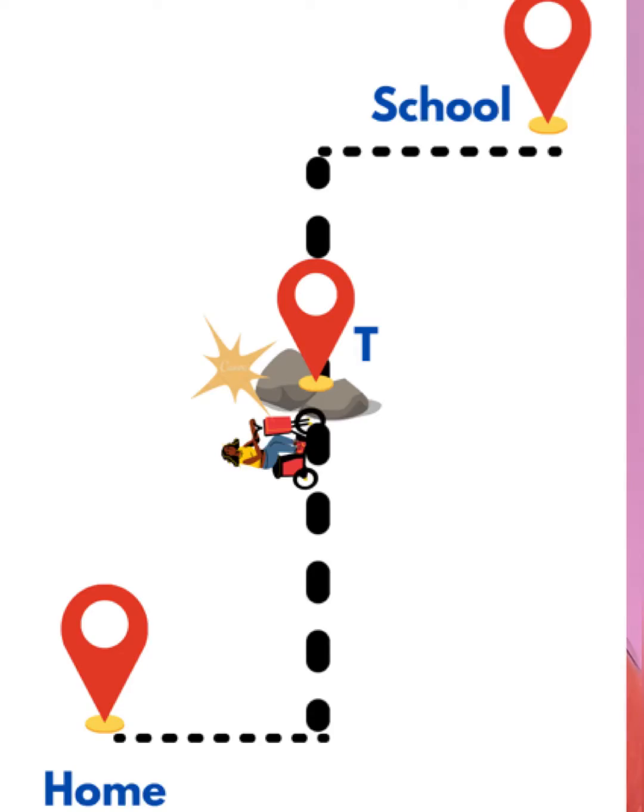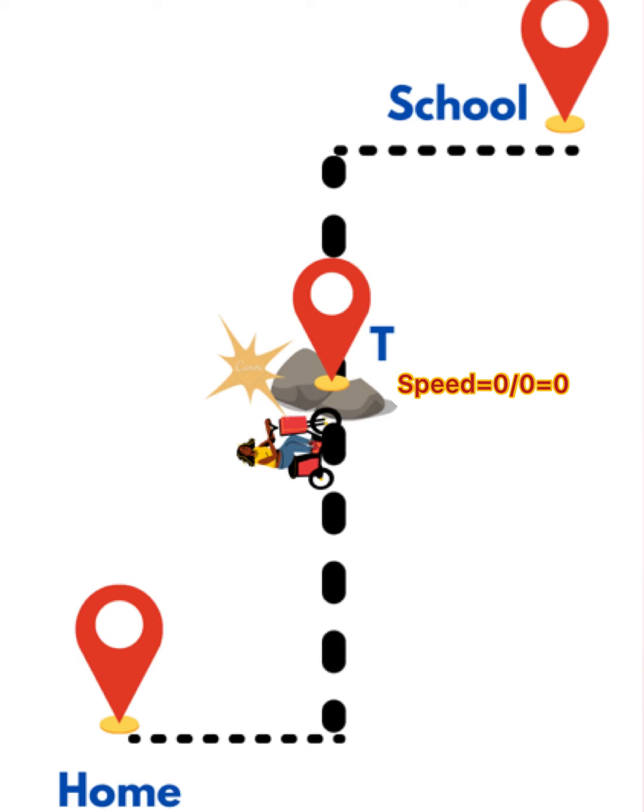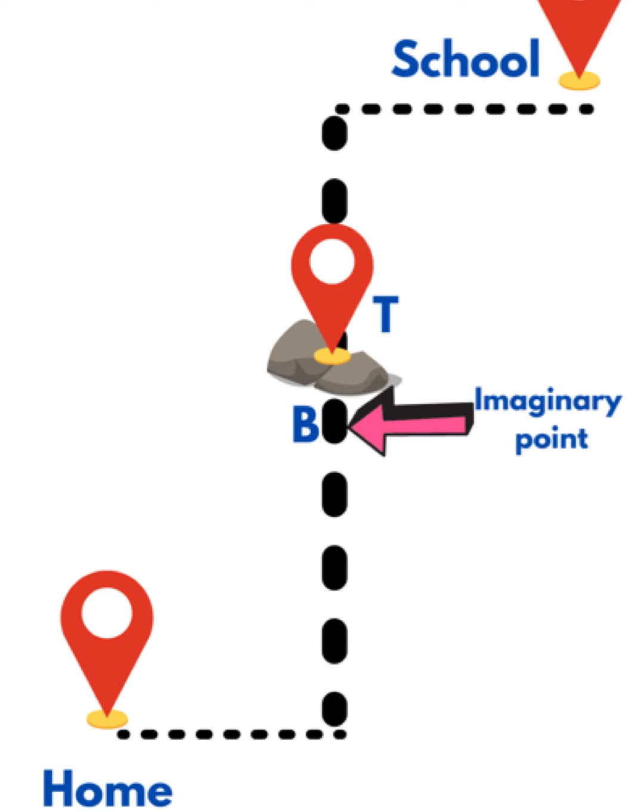The impact can only be measured by the speed at that particular time. The speed at that particular point appears to be zero because the distance is zero and the time is zero. To find the speed at a particular point, we need to take a fixed reference point — here we take an imaginary point close to where you got hurt.